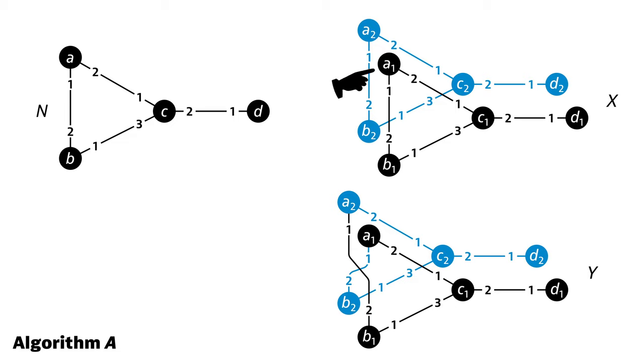Basically, if we imagine that we run algorithm A simultaneously in parallel in these three networks, we will see exactly the same messages, and exactly the same state transitions between corresponding nodes. And if, for example, A1 in Y ever stops and produces some output, then all these other nodes will also stop in the same round and produce the same output.